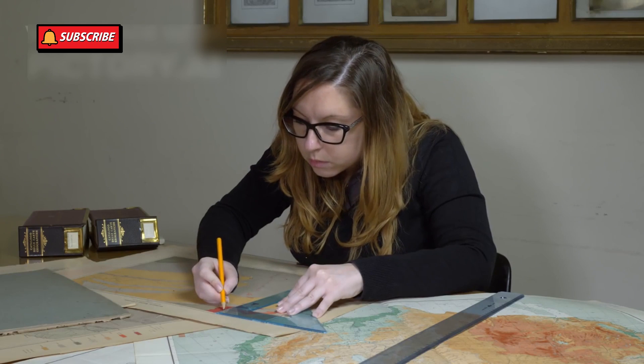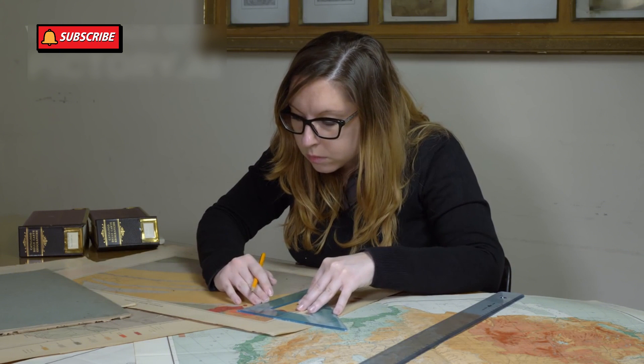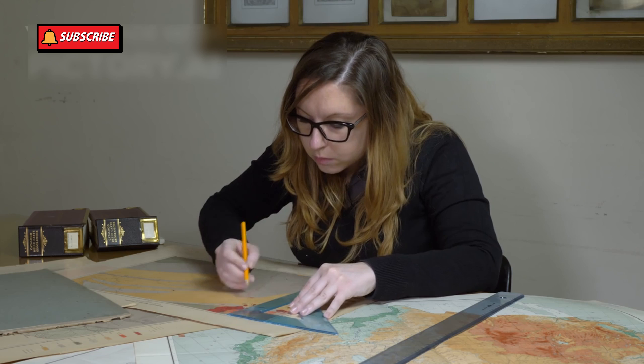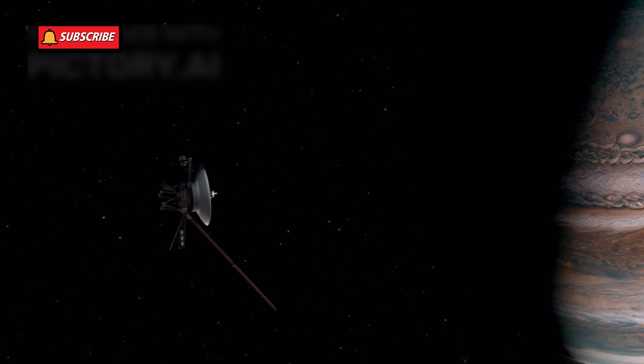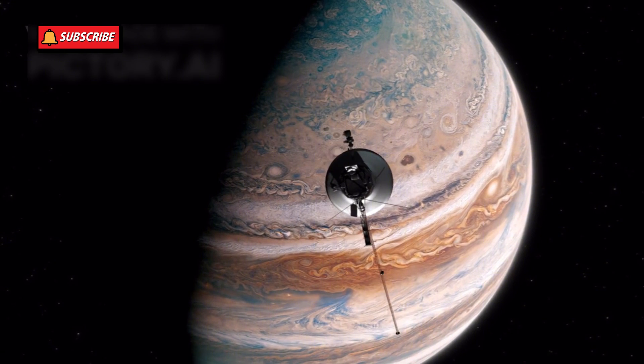Gary Flandro, a PhD student in aeronautics at the California Institute of Technology, discovered this alignment and realized the opportunity to study the outer planets efficiently. The Voyager spacecraft were launched with the intent of exploring these massive gas giants while traveling at incredible speeds and distances.